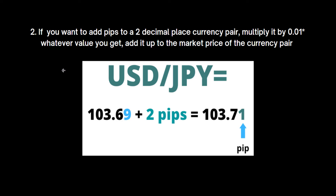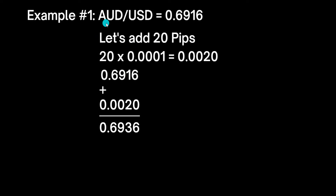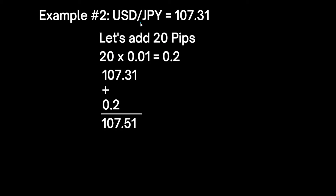Let's look at an example. Say we have Australian dollar against the US dollar at a given current market price. If we want to add 20 pips to this, we multiply 20 pips by 0.0001, which gives us 0.0020. We then add this value to the market price. So the market price plus 0.0020 gives us the new current price after adding 20 pips.